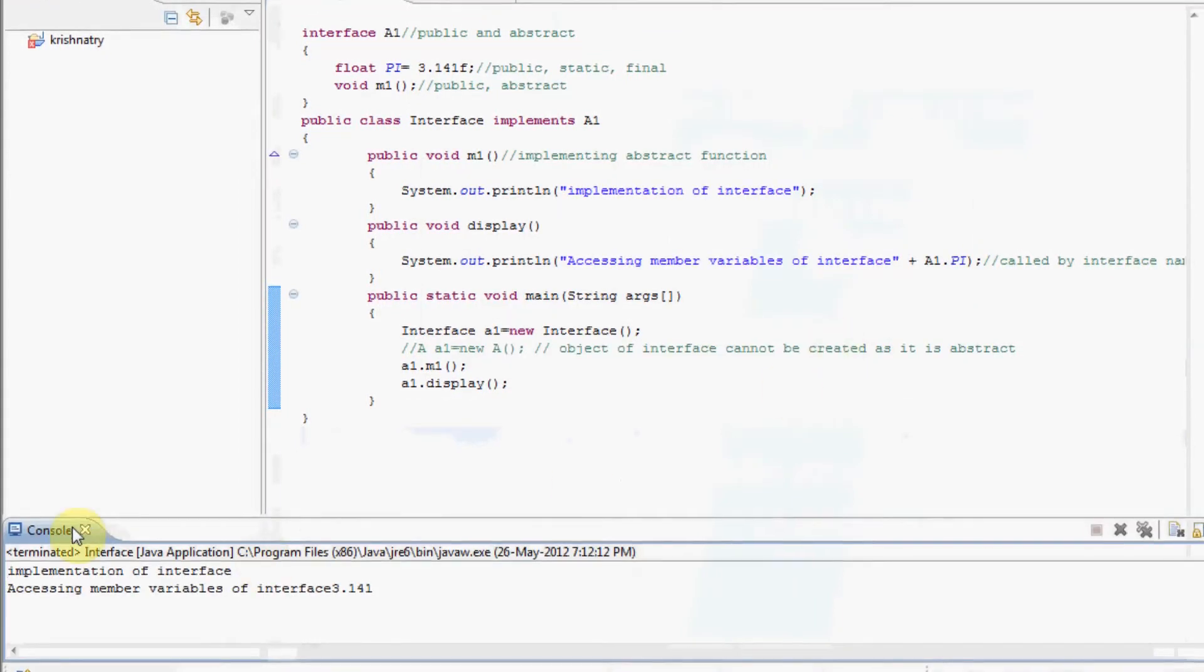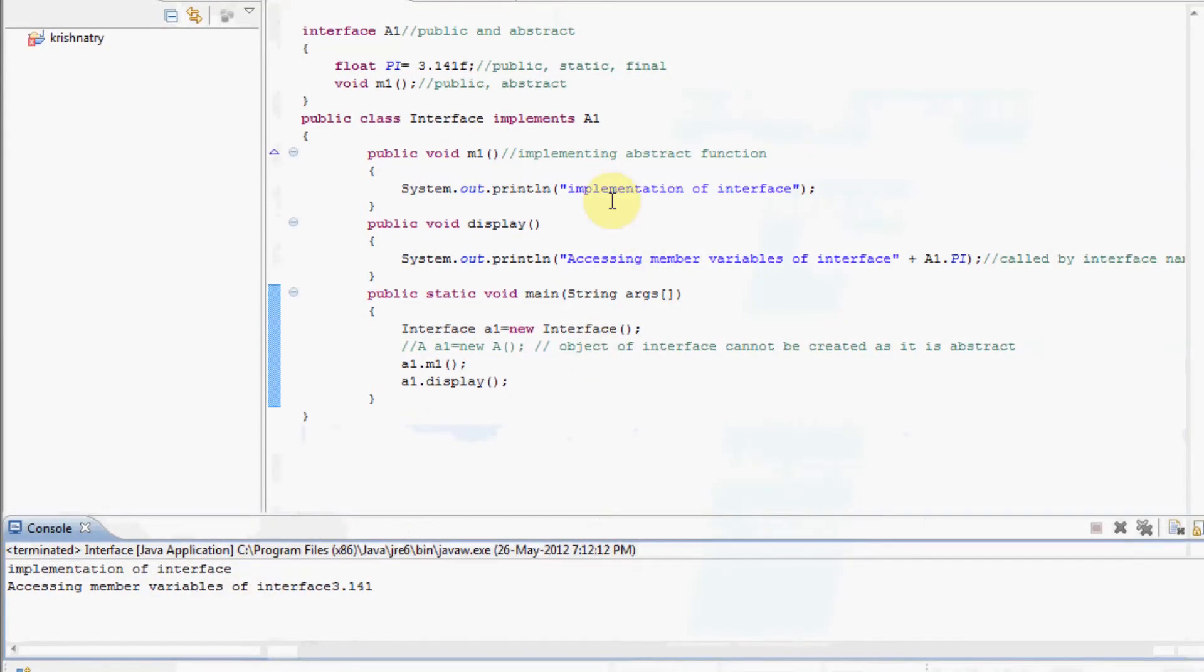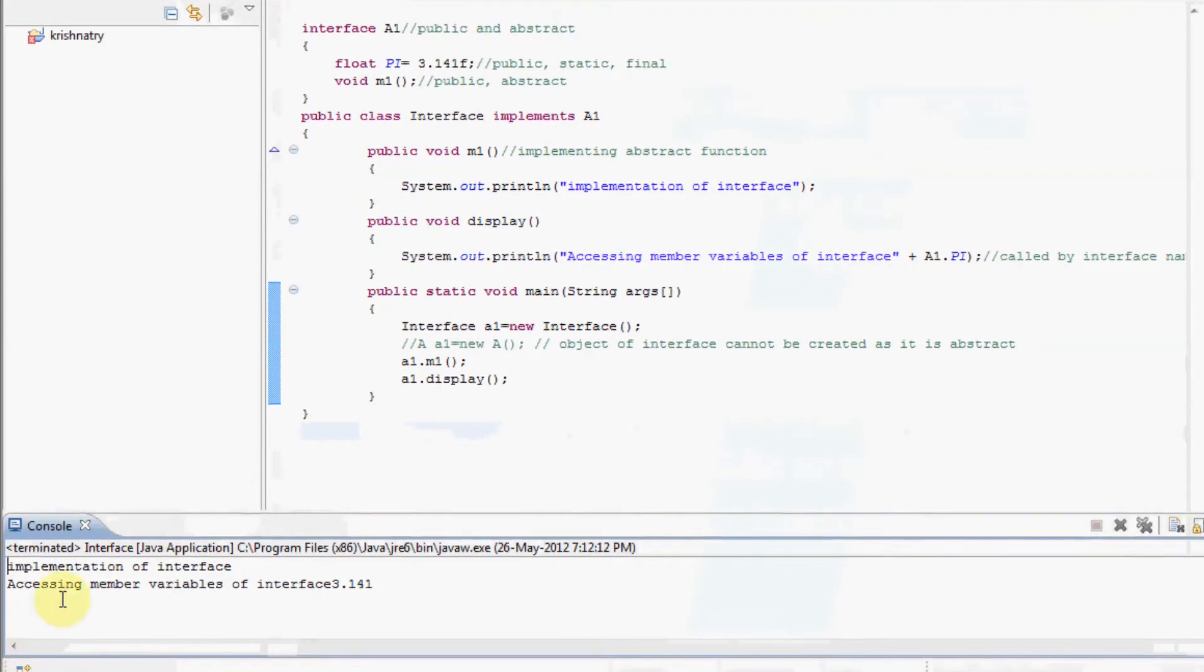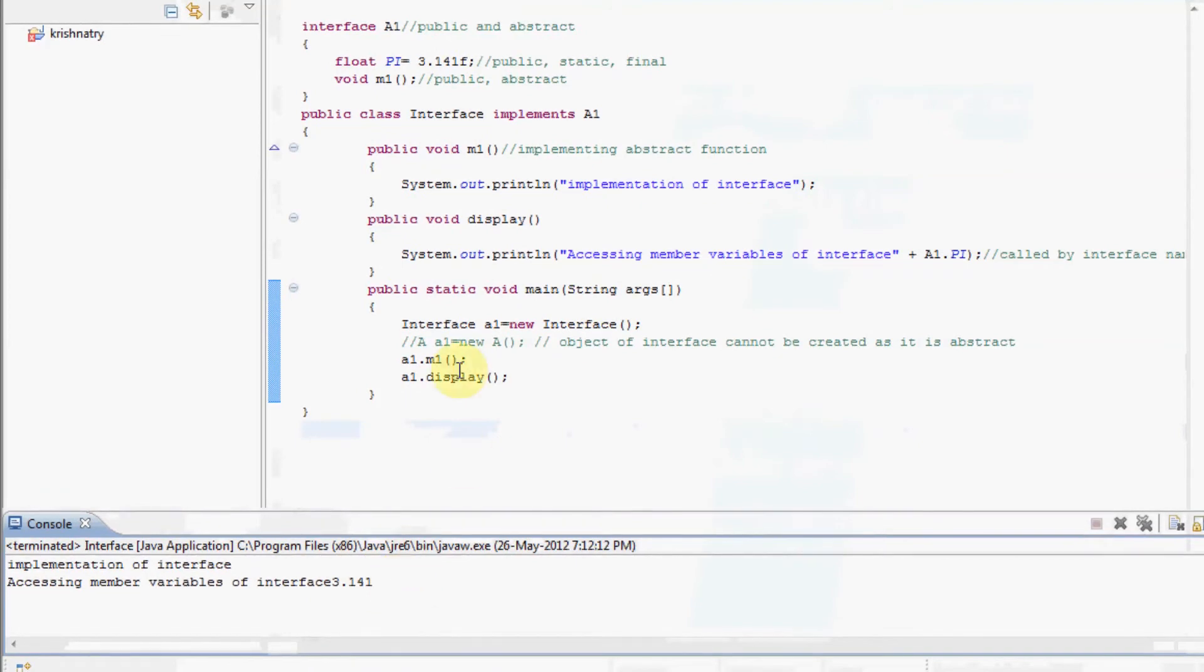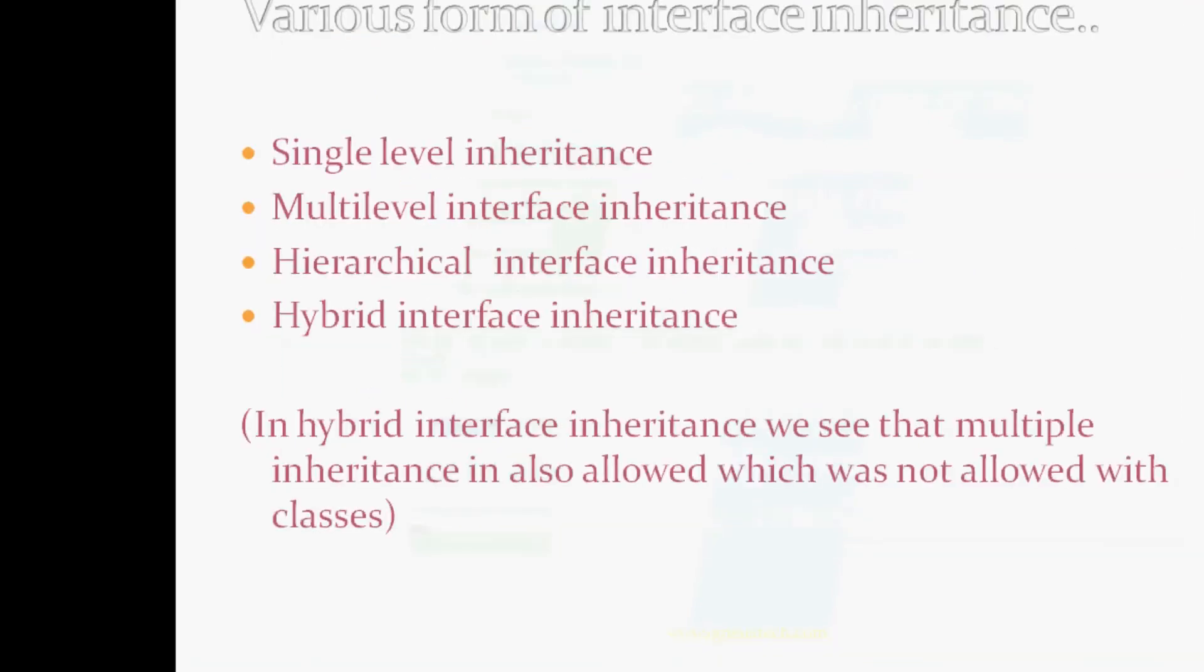I can see in output, implementation of interface which was there in m1 method, and accessing member variables of interface and value 3.141 which was there in display method. We have seen an example of interface.